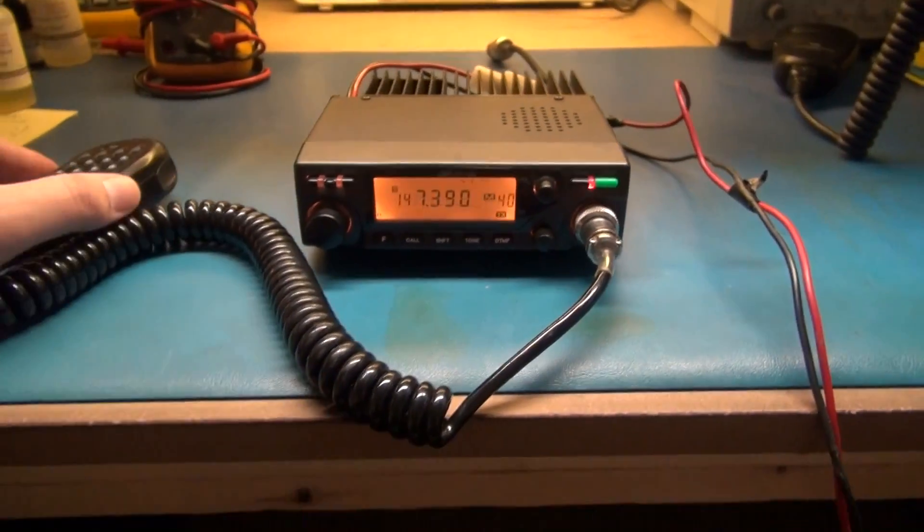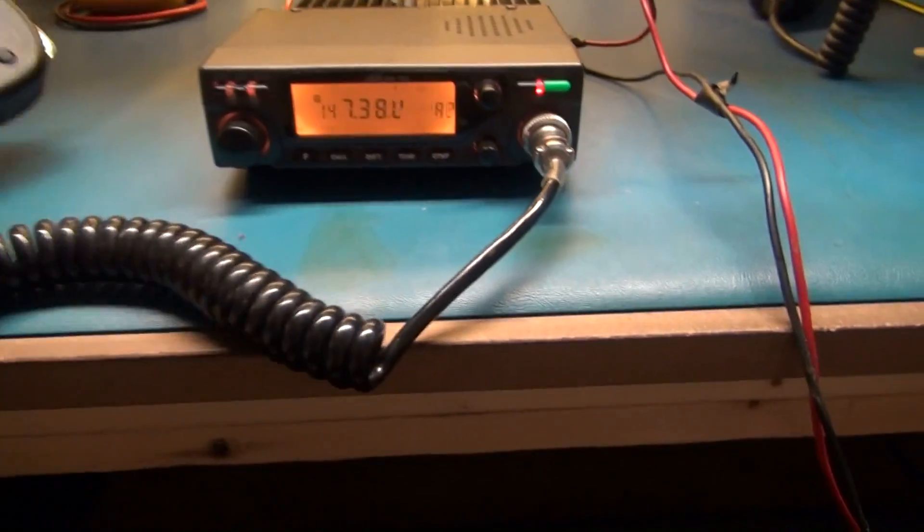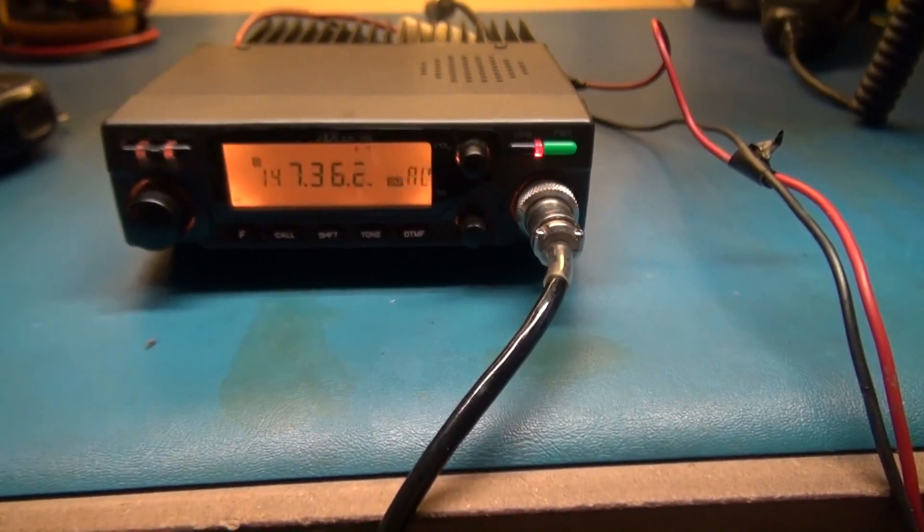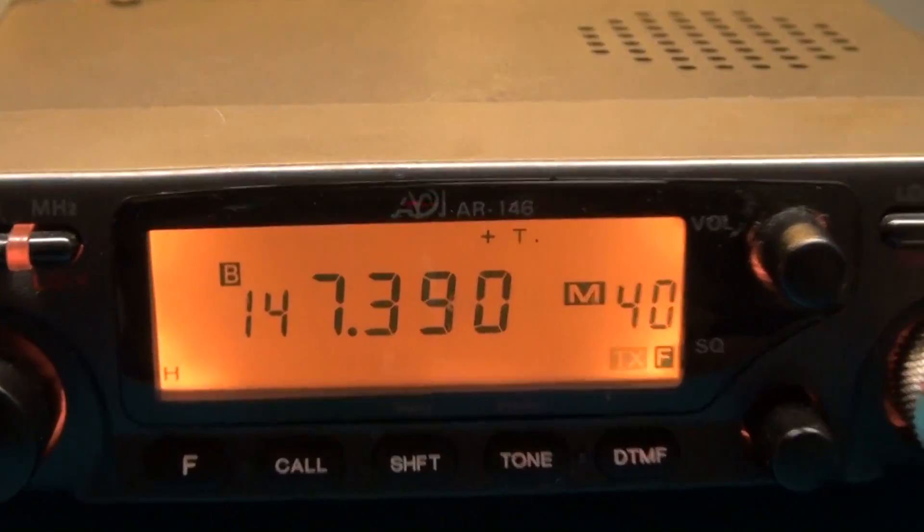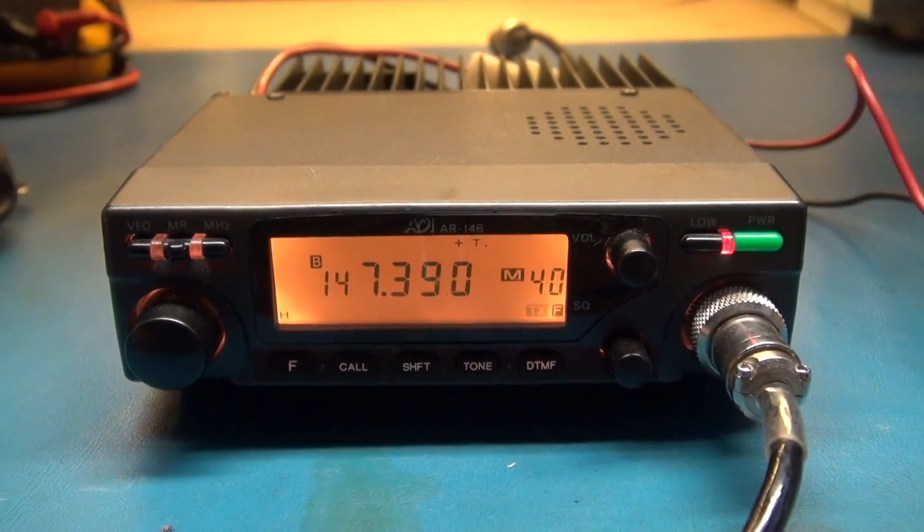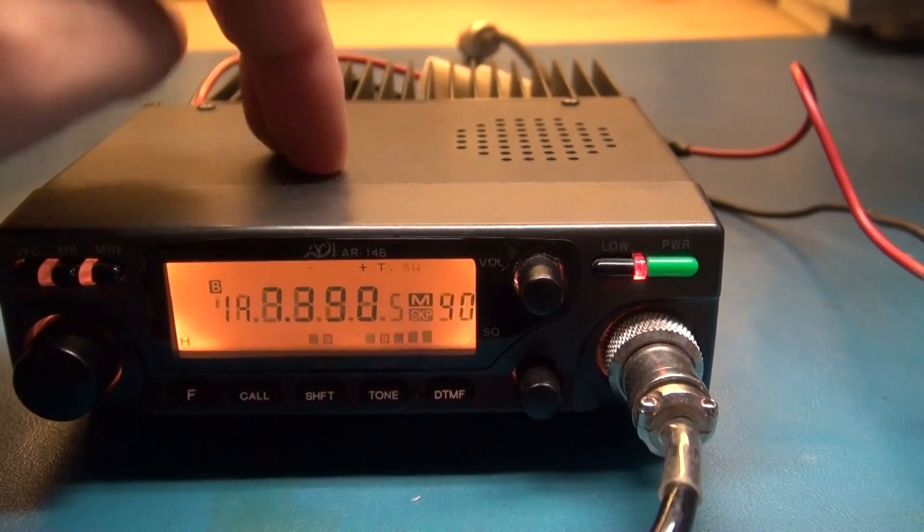All right, so what we got on the bench today is an ADI - I don't know what the hell this thing is, some kind of off-breed disposable radio. It's an ADI 146. This thing's got a plethora of problems with the screen.